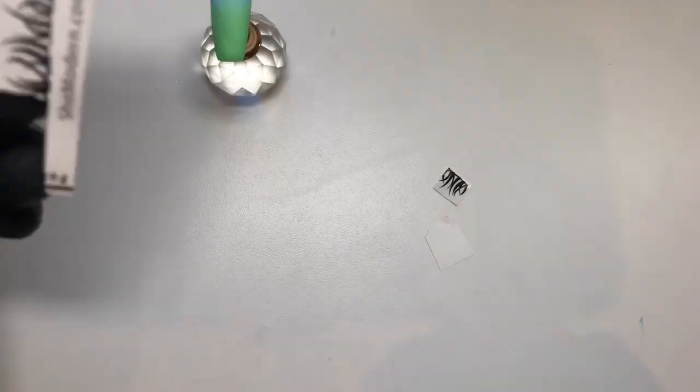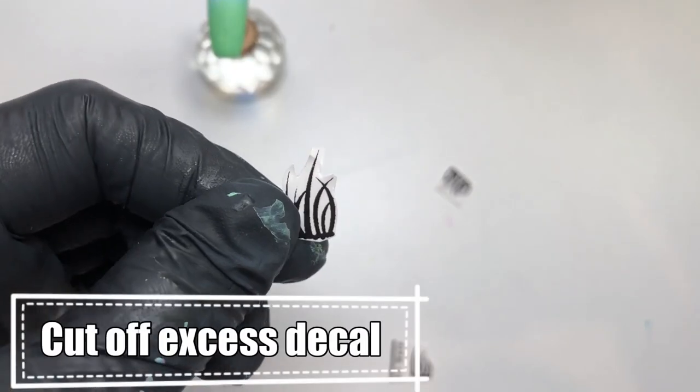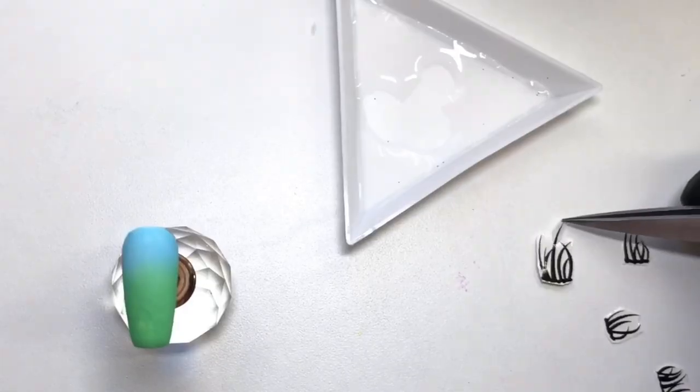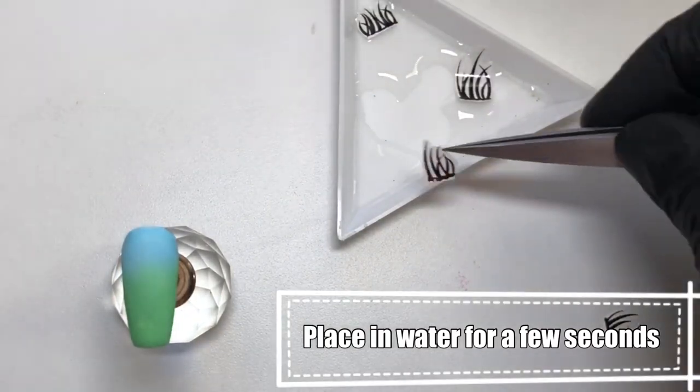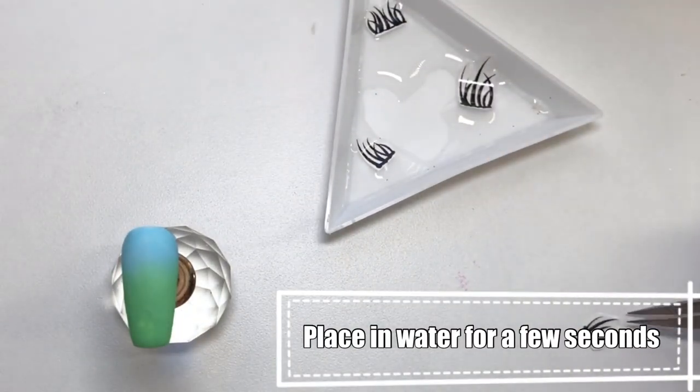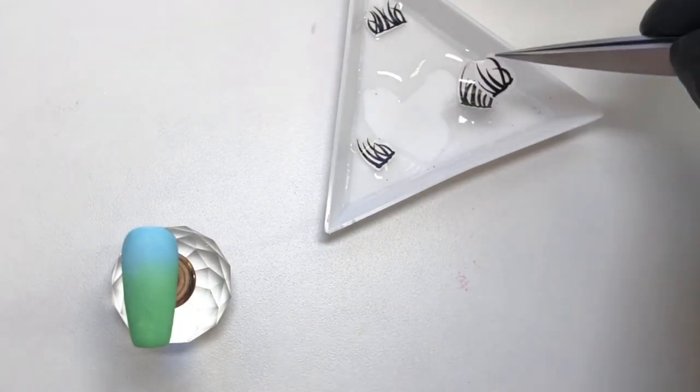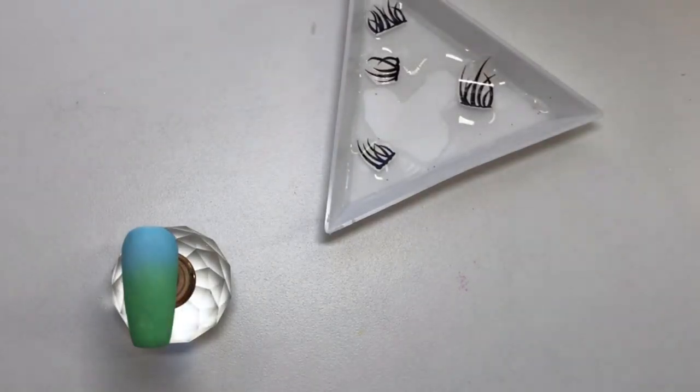I'm just going to cut out the bits that I want now. It's good if you can cut as much of the excess decal off as possible. It will just make that show up less when you place it on the nail.